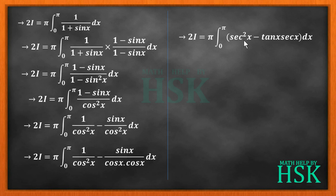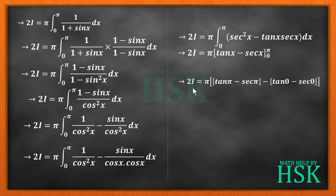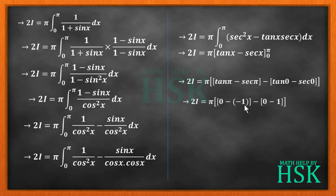The integration of sec²x is tan x, and the integration of tan x · sec x is sec x. So I get 2I = π · [tan x − sec x] from 0 to π. Substituting the limits: tan π = 0, sec π = −1, tan 0 = 0, sec 0 = 1. So the bracket evaluates to (0−(−1)) − (0−1) = 1+1 = 2. Therefore 2I = 2π, and the 2s cancel.